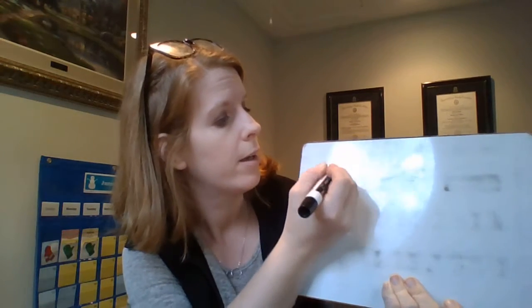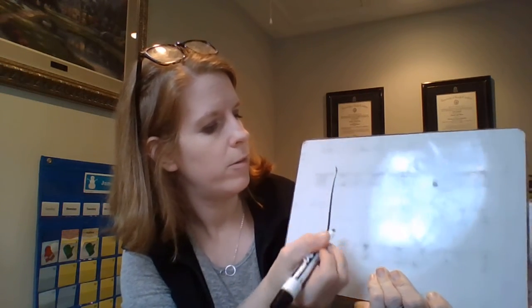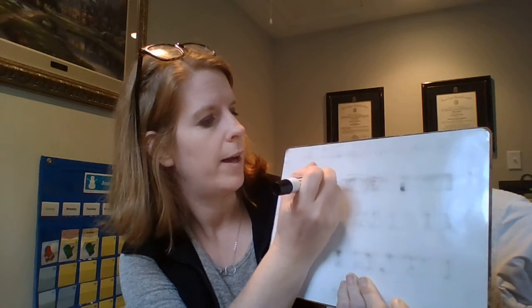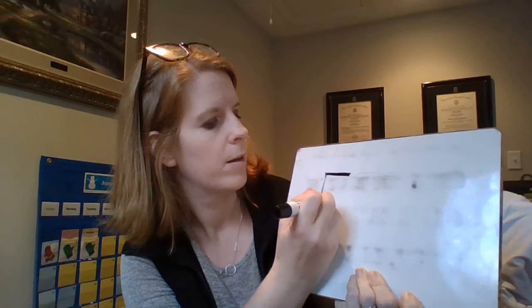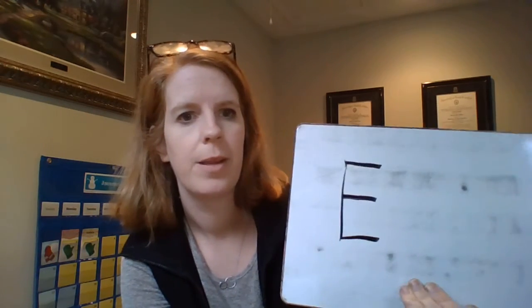So let's start with an uppercase E and remember that's elephant on end trick. So you start with a line down, a line, whoops, a line across the top, a line in the middle, and a line at the bottom. There's your uppercase E.